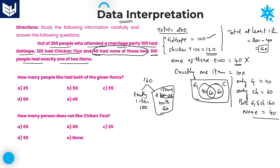If you add all four values — 40 plus 60 plus 60 plus 40 — you will get 200, which matches the total. That is the information derived from this three-line passage. Even though the information is less, you must be very cautious while solving it.